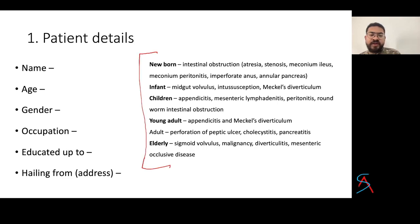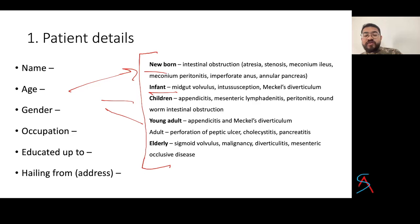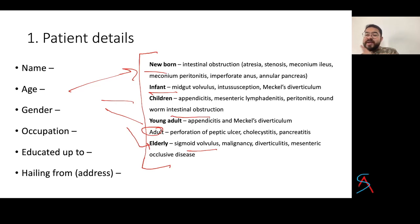In history, ask about name and age. As per age group: in newborns, think of intestinal obstruction; in infants, volvulus, intussusception, or Meckel's diverticulum; in children, appendicitis, mesenteric adenitis, peritonitis, or roundworm infestation; in young adults, appendicitis or perforation; and in elderly adults, sigmoid volvulus or malignancy. Keep these differentials in mind based on the patient's age.